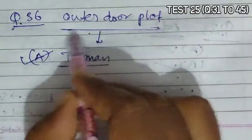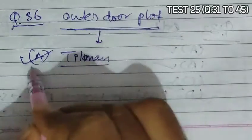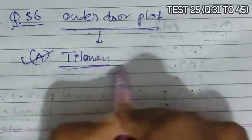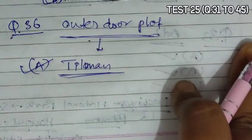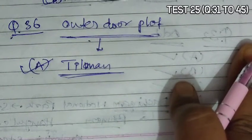Question 36: Outdoor plots are given by Tilman. So option B is the correct answer.